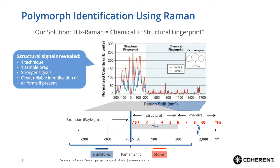These Raman shifts below 200 wavenumbers actually correspond to terahertz-level vibrational energy states. Five wavenumbers corresponds to 150 gigahertz, and 200 wavenumbers corresponds to 6 terahertz. So this low-frequency region of the Raman spectrum actually covers the entire range of a terahertz absorption spectrometer, just with Raman capability instead. That's why we call it terahertz Raman.